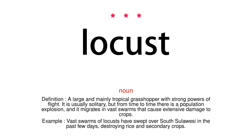Locust. Noun. Definition: A large and mainly tropical grasshopper with strong powers of flight. It is usually solitary, but from time to time there is a population explosion, and it migrates in vast swarms that cause extensive damage to crops.